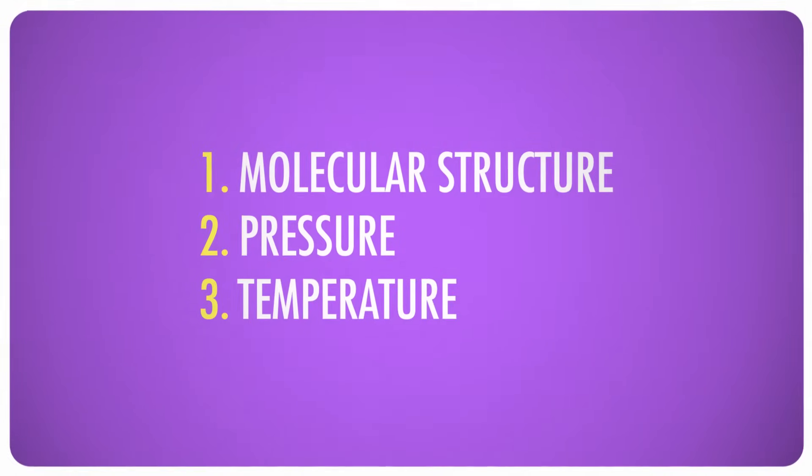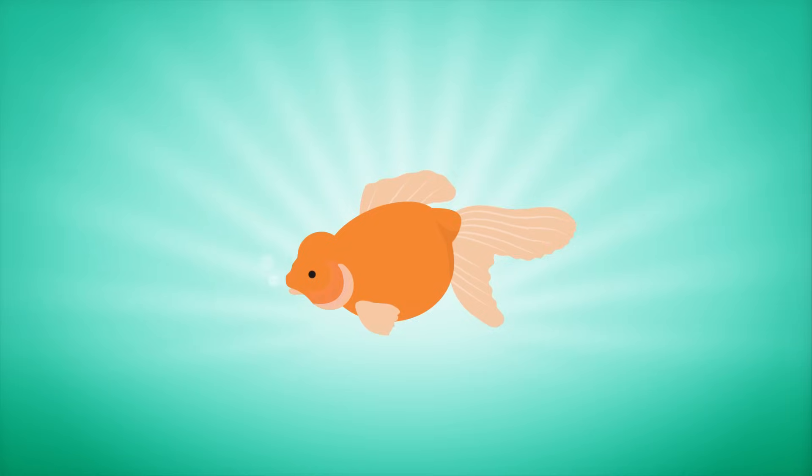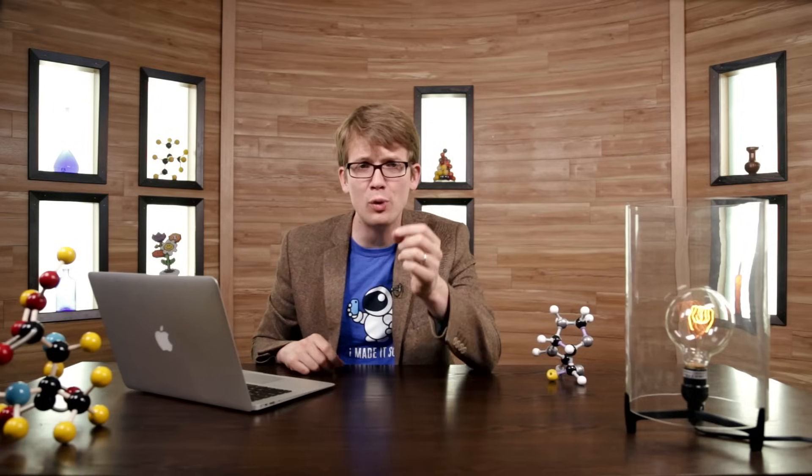All solutions have the qualities that they do because of the same three properties: molecular structure, pressure, and temperature. These are the factors that affect a substance's solubility, the amount of solute that will dissolve per volume of solvent. Whether we're talking about the air that we breathe, the water that fish breathe, the bubbles in Coca-Cola, or the toxin in the tissues of the Japanese pufferfish, what usually matters most about a solution is how much solute is in it.